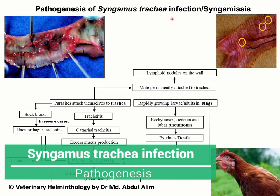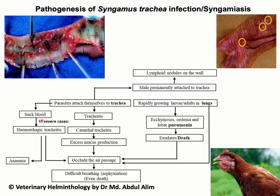Pathogenesis of Syngamus trachea infection: in the trachea, adult parasites attach themselves and suck blood, causing hemorrhagic or catarrhal tracheitis due to blood, mucus, and other inflammatory exudates. There will be occlusion of the air passages, and as a result the bird will suffer from difficulty in breathing. In severe cases, birds may die. Occlusion of the air passages may also be contributed to by the rapidly growing larval stages and adults in the lungs.